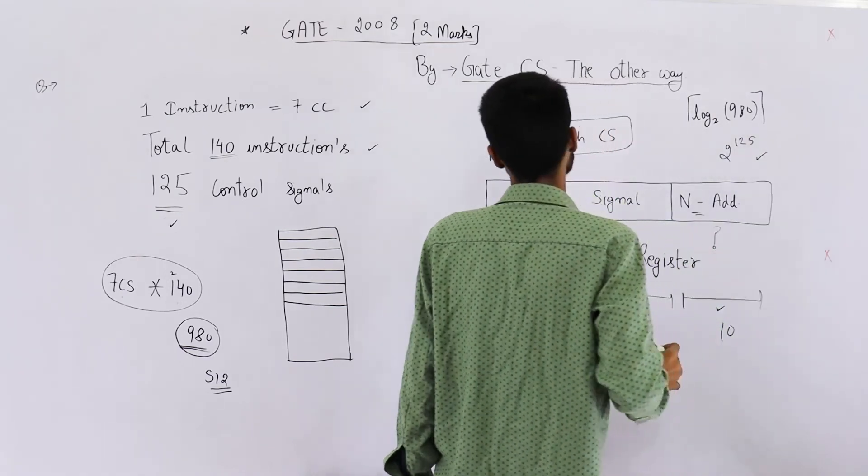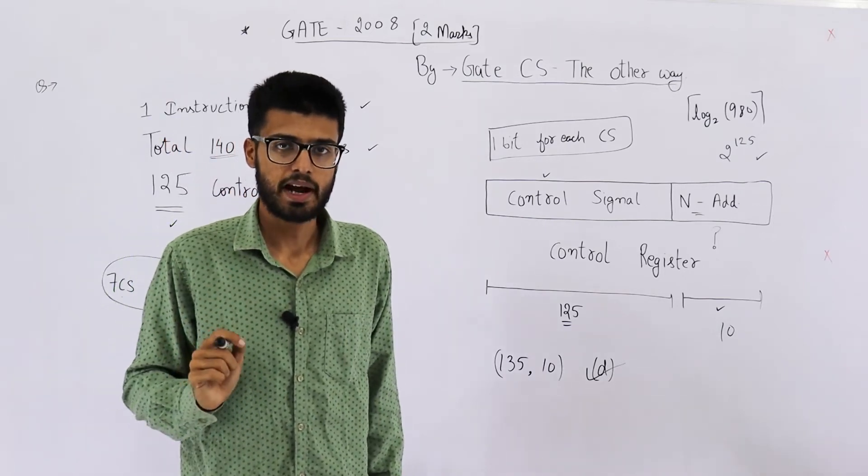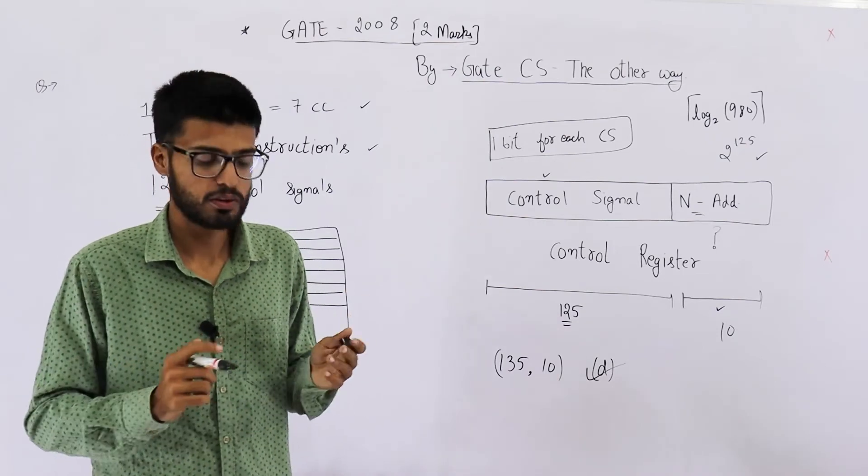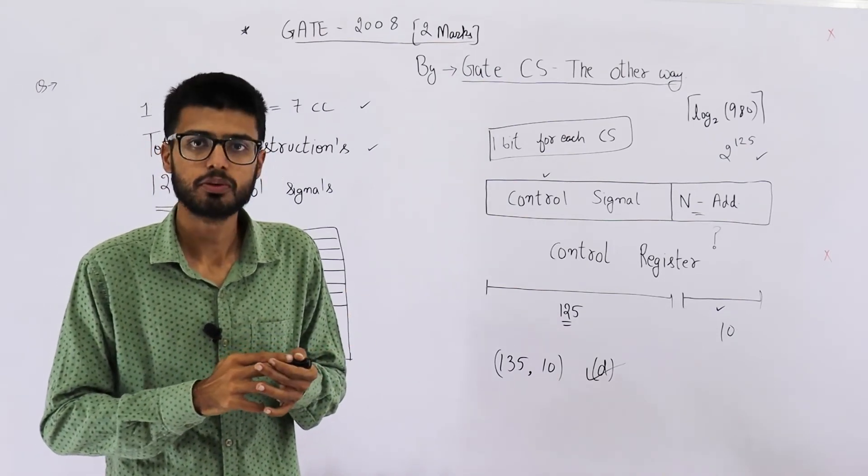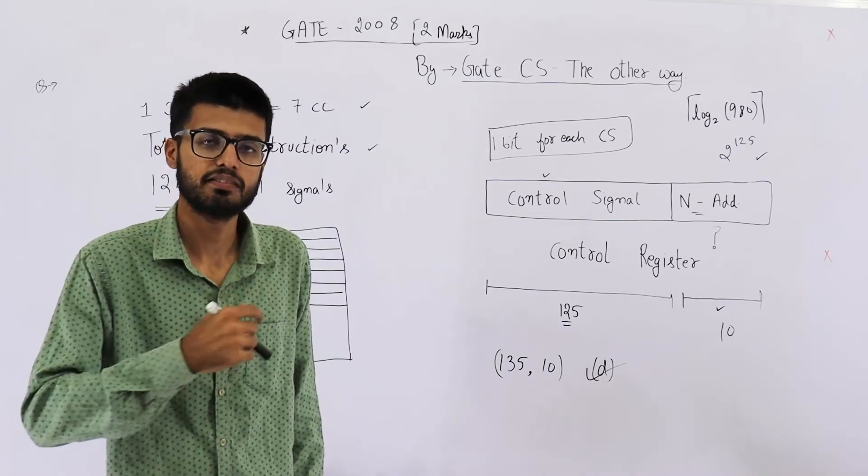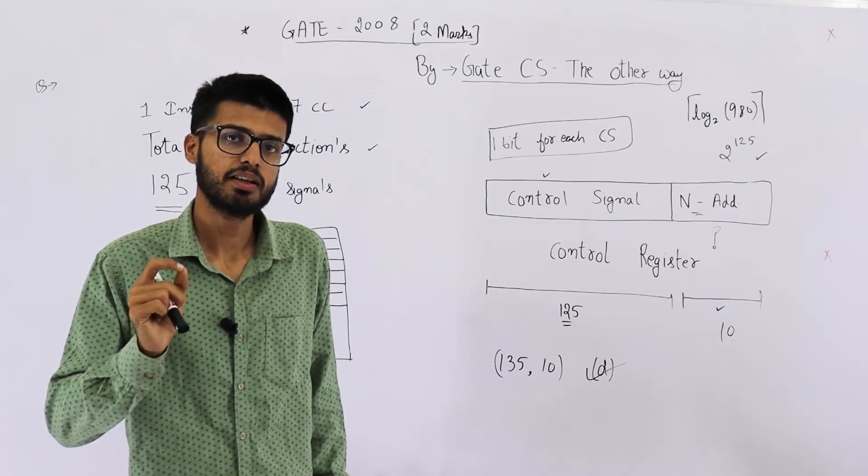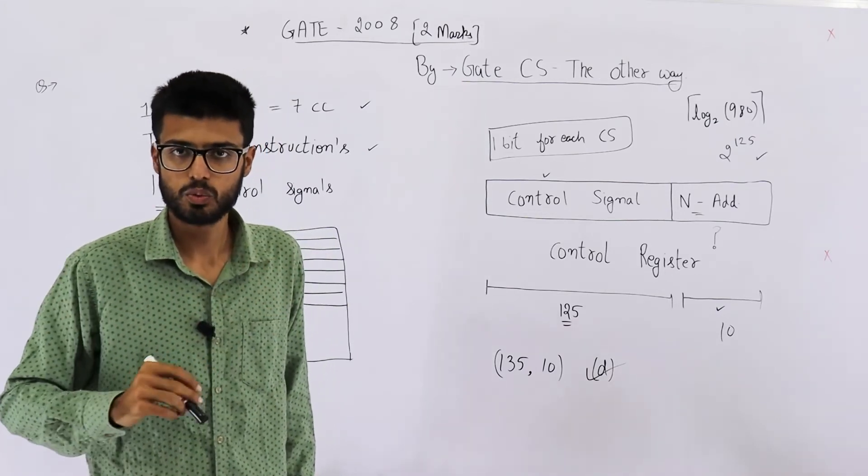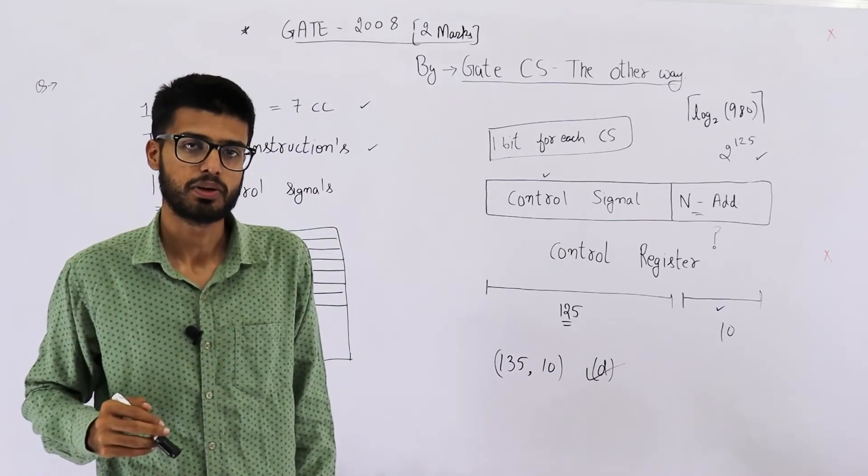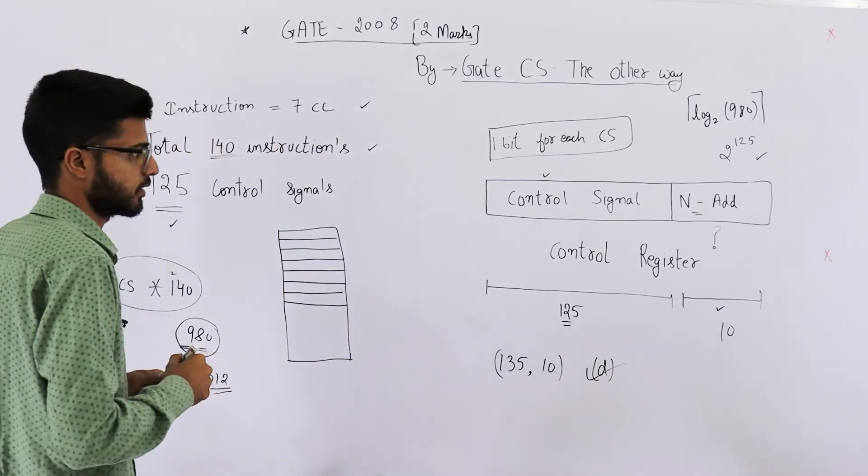For example, say you want to perform add operation on the ALU. First control signal that you are going to require is add. Second control signal that you are going to require is a write signal given to some register which contains the first operand. Similarly, you're going to require two write signals for two different registers which will provide the operands. So they are three in number: one for ALU, two for the registers.